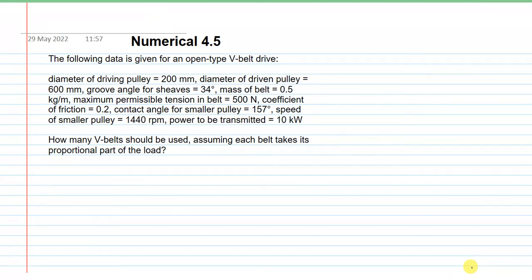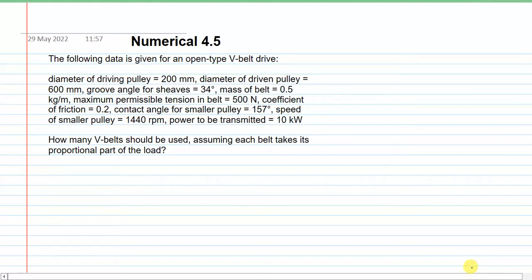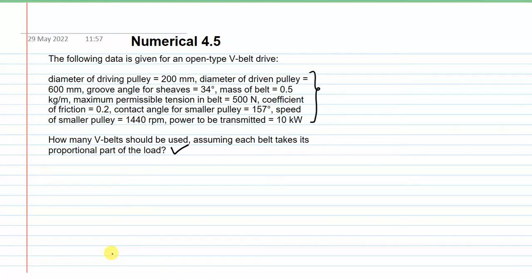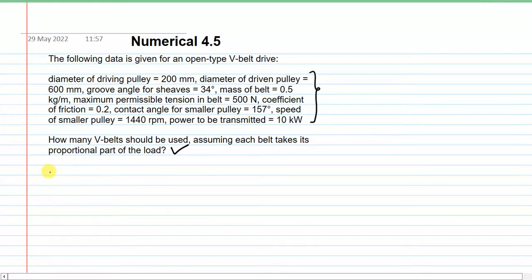We will solve a numerical on the basis of selection of V-belt drive — particularly addressing a problem about how many belt drives are to be used for given conditions. The problem statement asks the designer to determine how many V-belts should be used, since the designer suspects that one belt may not be sufficient for this particular set of design parameters. We need to sort out how many belts are required to transmit the given power under the specified conditions.